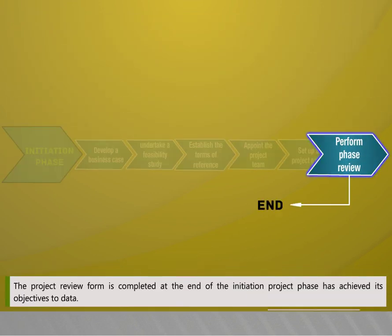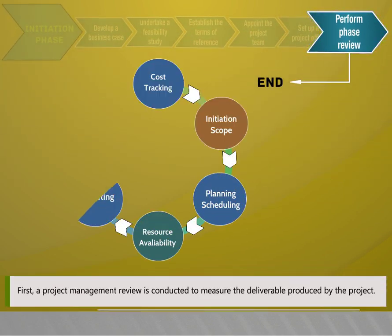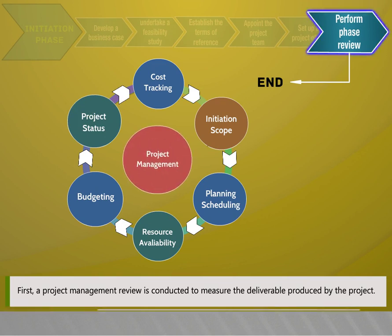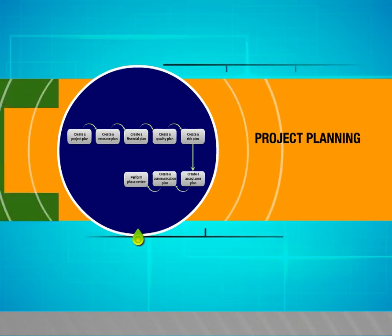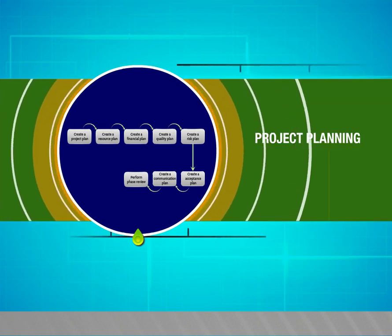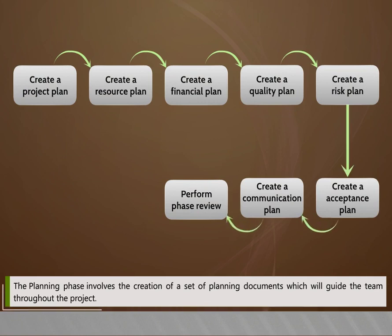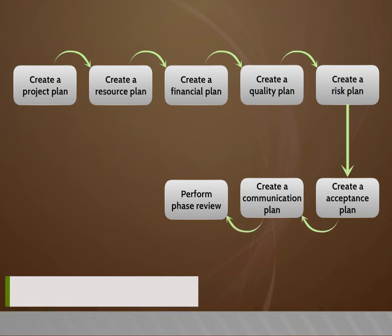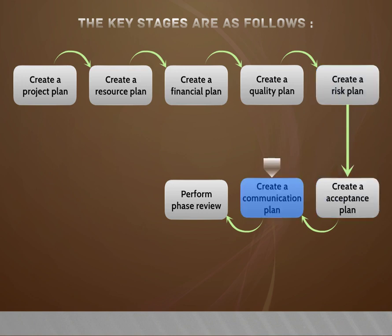The project review form is completed at the end of the initiation phase to confirm it has achieved its objectives to date, and a project management review is conducted to measure the deliverables produced. The planning phase involves the creation of a set of planning documents which will guide the team throughout the project. The key planning documents are: project plan, resource plan, financial plan, quality plan, risk plan, acceptance plan, and communications plan.